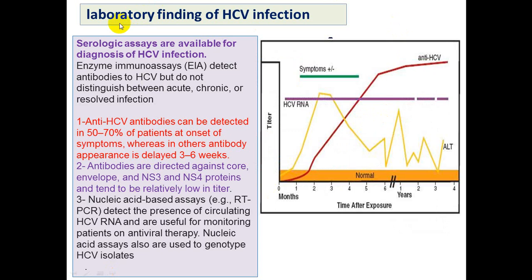Regarding laboratory findings of hepatitis C virus infection: the first biochemical marker is a raised ALT (alanine transaminase), originally called GPT. This enzyme is nearly specific to the liver or hepatocytes.